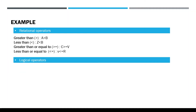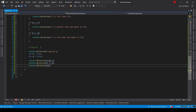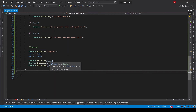For the last category — logical operators — we have logical AND, logical OR, and logical NOT. In logical AND, if both operands are true or non-zero, the condition becomes true. In logical OR, if any one operand is true or non-zero, the condition becomes true. In logical NOT, it reverses the logical condition of its operand. Here I have declared two variables with boolean values true and false respectively, using logical AND for the first condition, logical OR for the second, and logical NOT for the third.